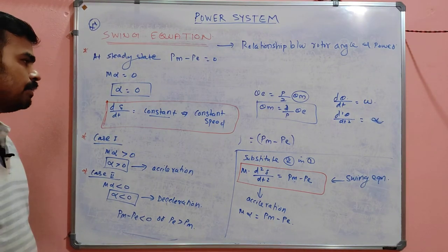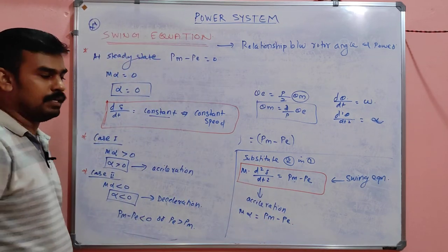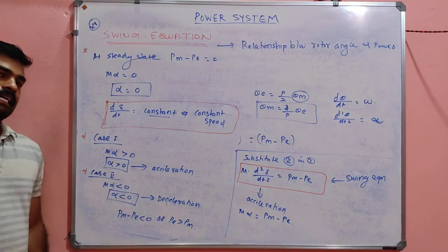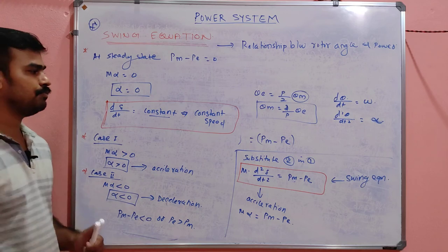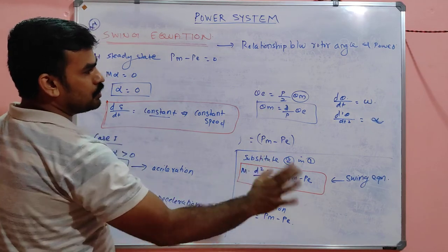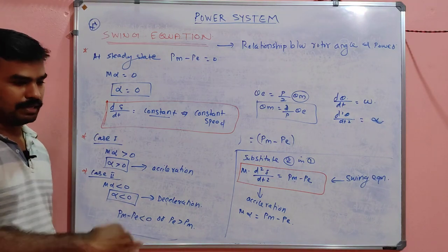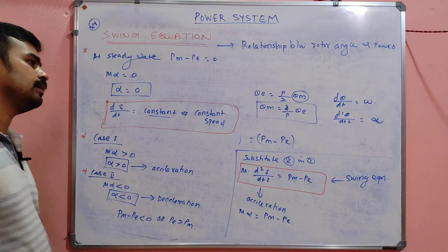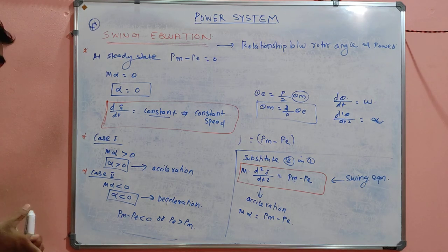So that's all about the swing equation. The most important thing is M × d²δ/dt² = P_M minus P, where M = GH / (π × f). This equation is the most important, and knowing it will allow you to solve many examination questions. Thank you.